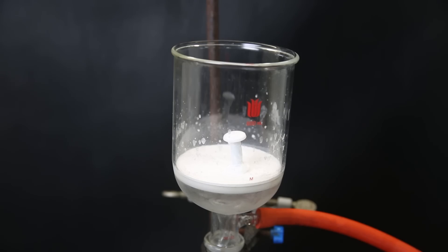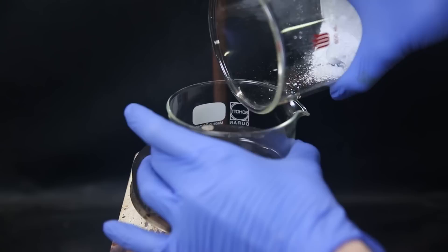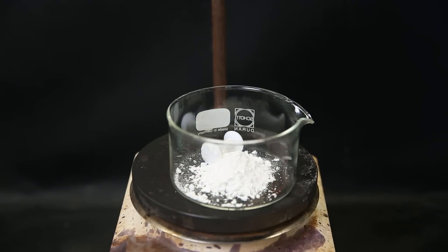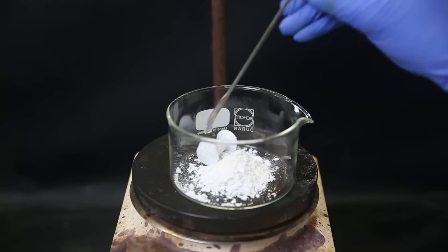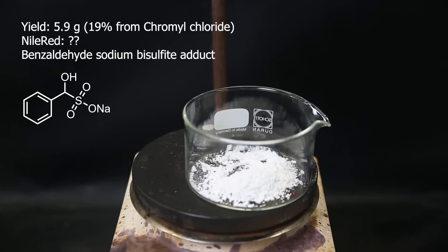I leave it to dry on the filter for a second so that the ether evaporates. I then move it all to a crystallizing dish. The yield of the bisulfite adduct turned out to be 5.9 grams, which is 19% calculated from the chromochloride. NileRed didn't say what his yield was. As a creator, I understand that he left out the yield. As a chemist, fuck you.